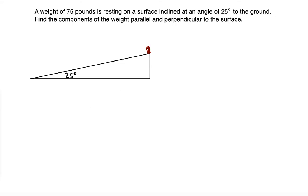In order to understand what the components of weight parallel and perpendicular to the surface are, you have to understand what perpendicular means. Obviously this side of the triangle is not going to be perpendicular to this surface. Perpendicular means there will be a right angle made with the surface and the height — not a vertical height, but a slant height that is perpendicular to the surface.